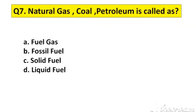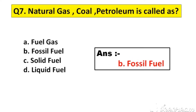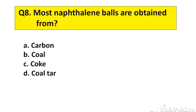Question number 7. Natural gas, coal, and petroleum are called as option A: Fuel gas, B: Fossil fuel, C: Solid fuel, D: Liquid fuel. The right answer is option B: Fossil fuel.